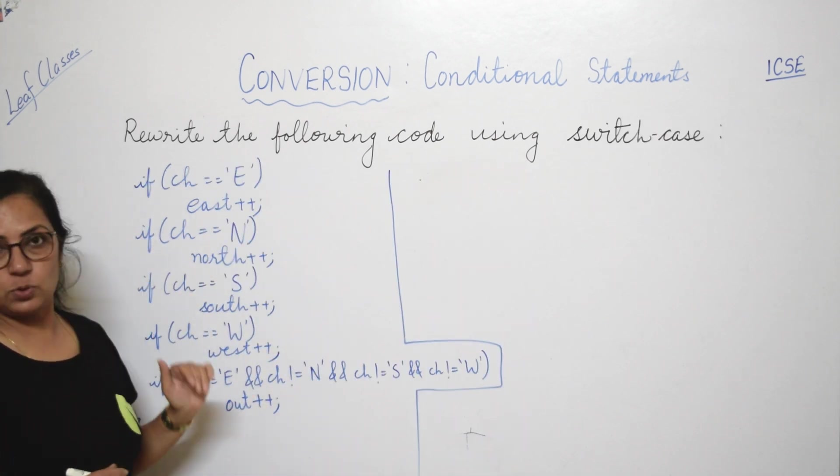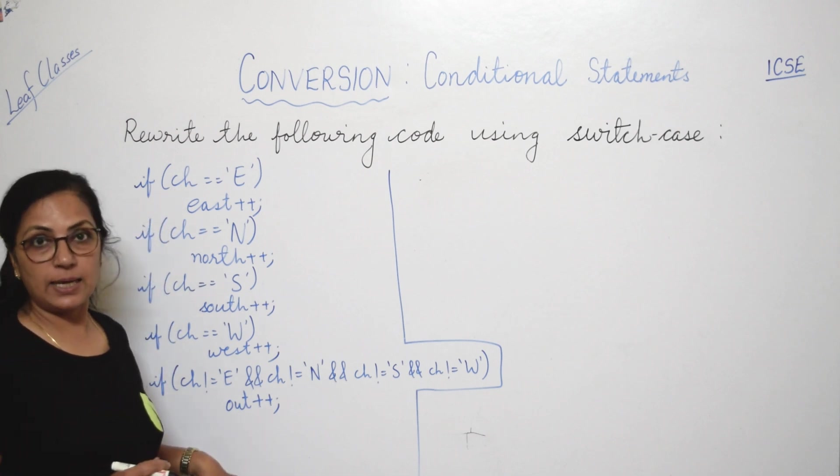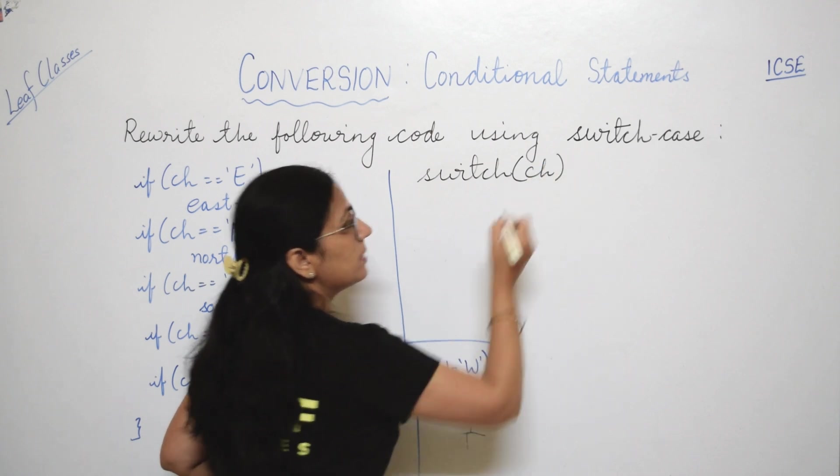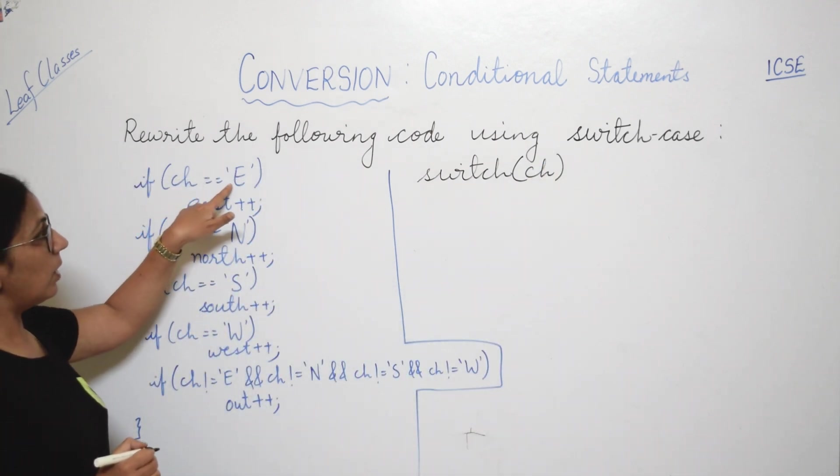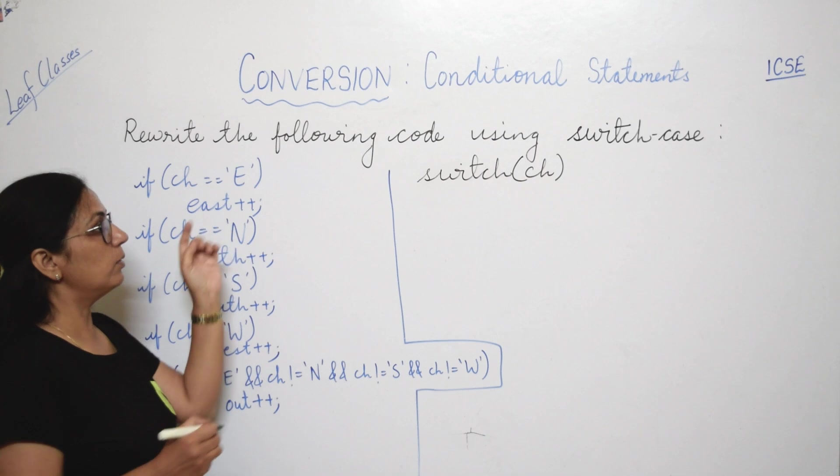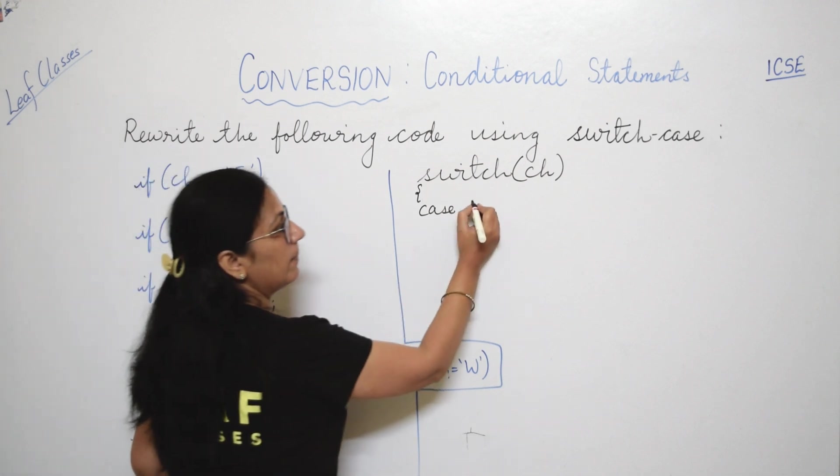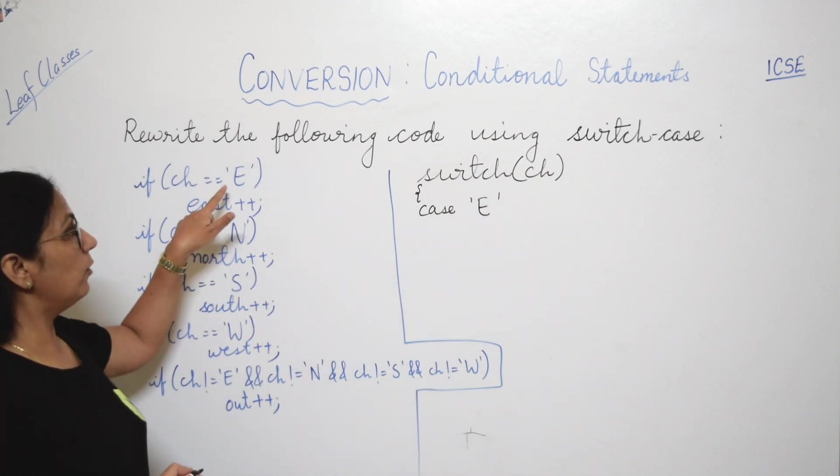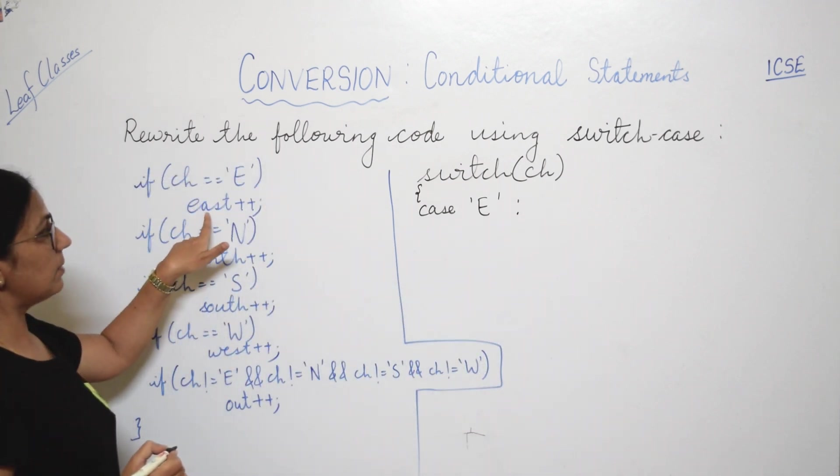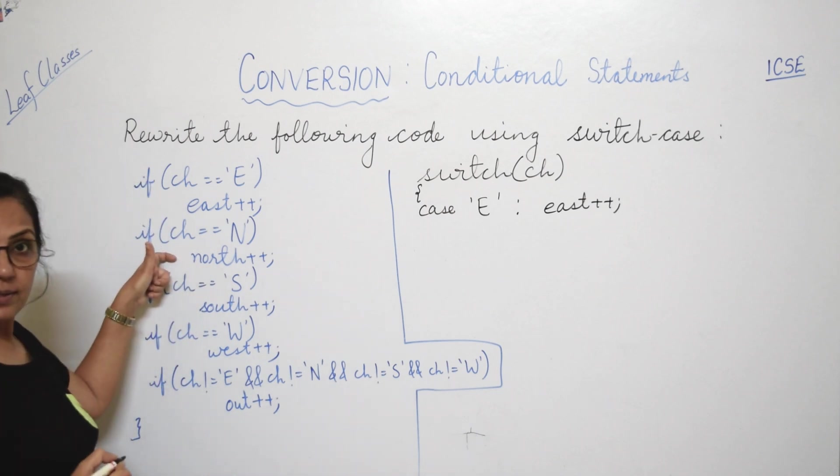Now children, one question to convert if to switch case. Now if you notice here, with all if, ch variable is used for checking, right? So that means we have the control variable for switch is ch, right? Now here what all are the conditions? Equality operator is used in first four. That means we have four case values. So switch block, all of you know, always within the pair of curly braces: case E. Always whenever you have character value for the case, it has to be enclosed within single quotes. If this is equals to E, what is the statement? East plus plus. This will be given here: east plus plus semicolon. And after that the next if is there. Is ke baad kya hai? Next if hai?